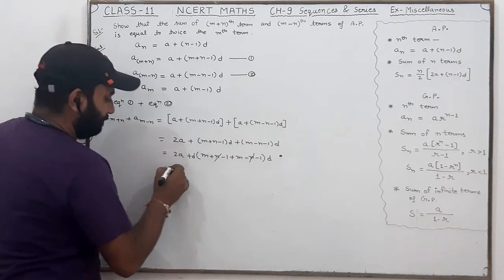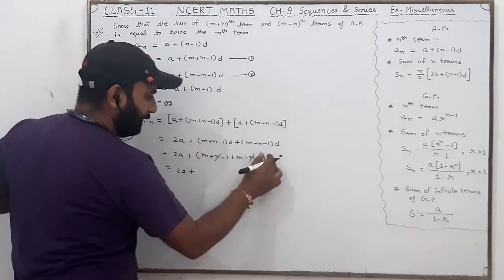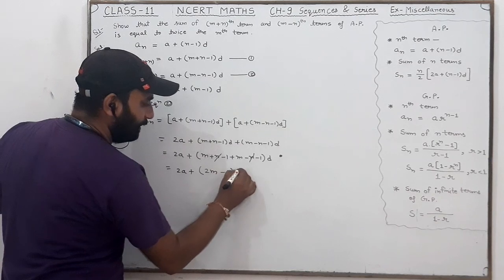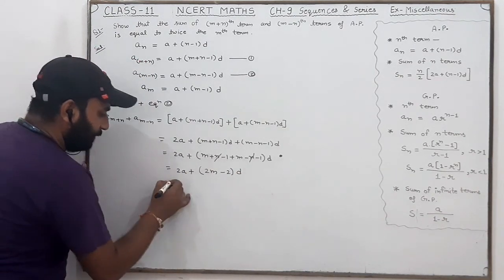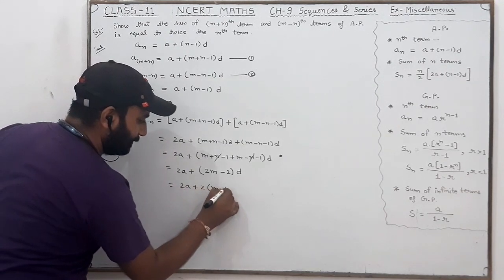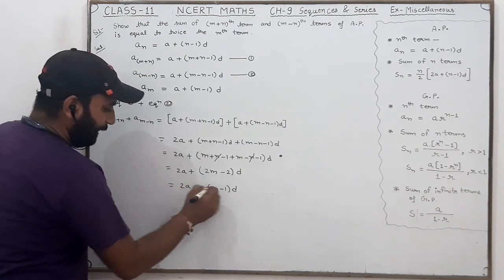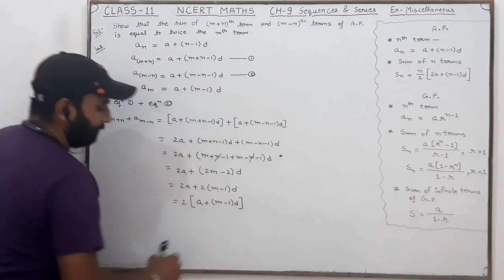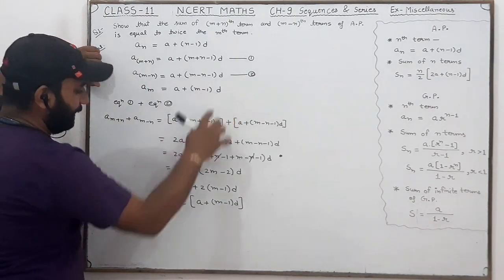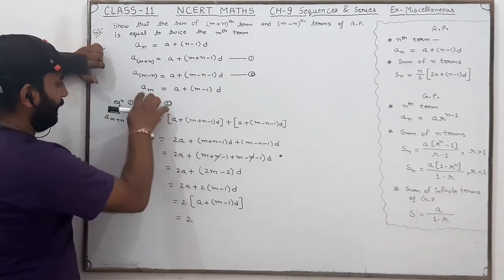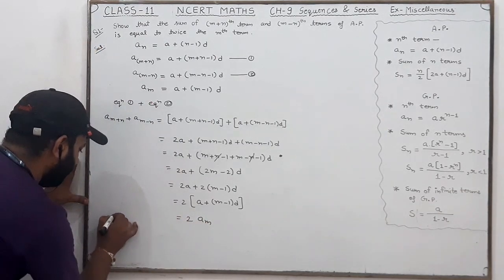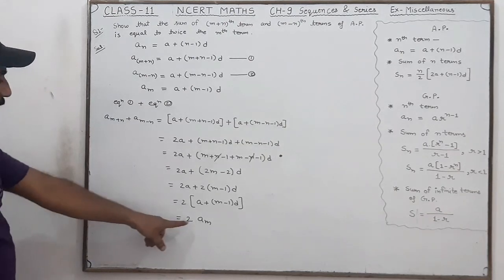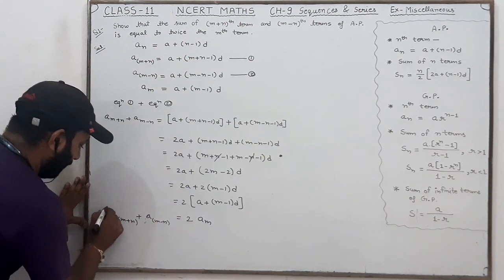So the sum of the (m+n)th term and (m-n)th term equals 2a + 2(m-1)d = 2[a + (m-1)d] = 2a_m, which is twice the mth term. Hence proved.